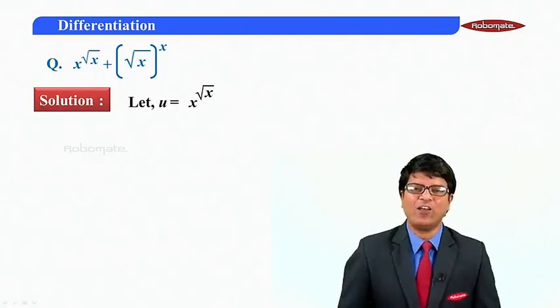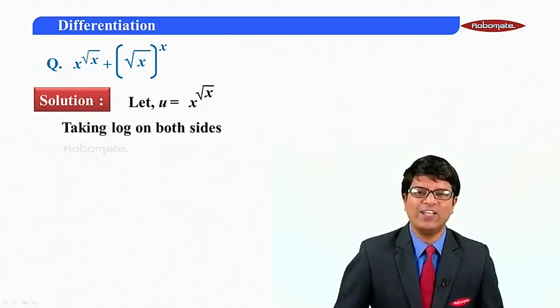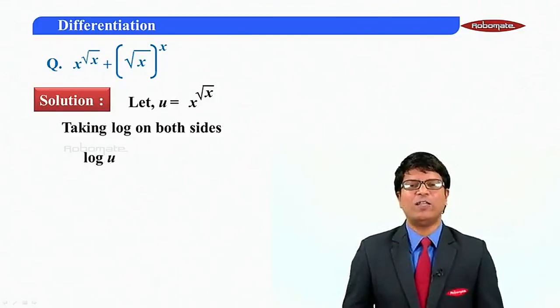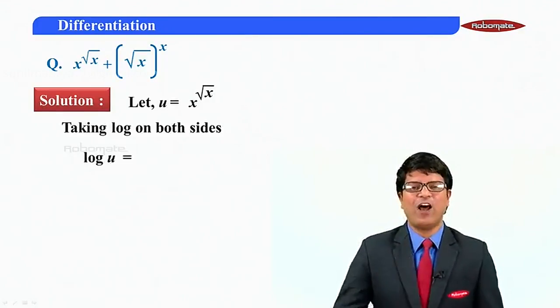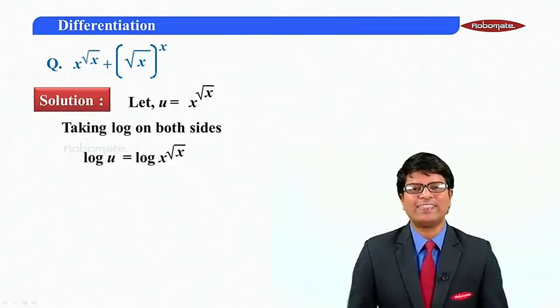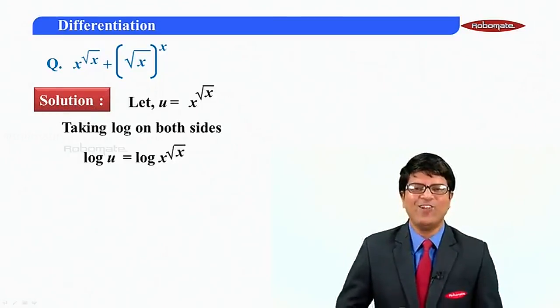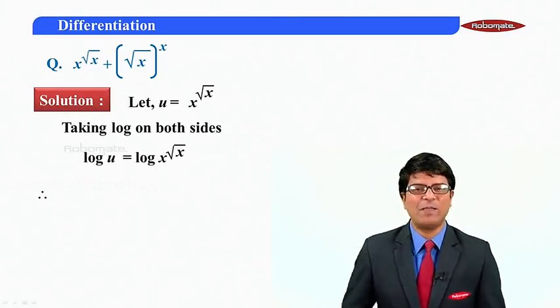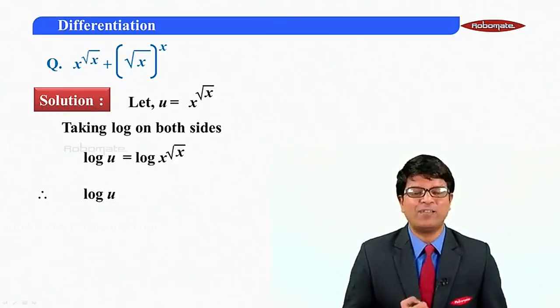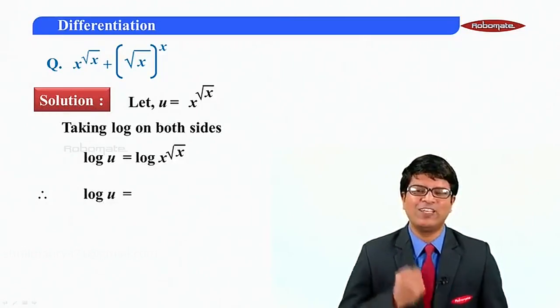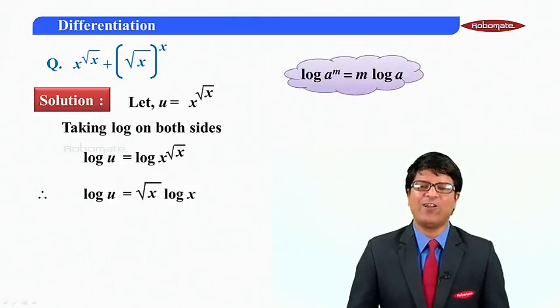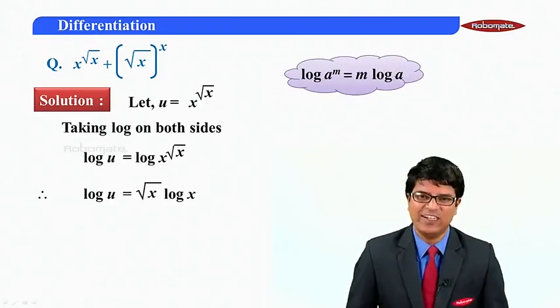Take log on both sides. Log u will be log of x raised to root x. Since the power becomes the coefficient, log u will be root x times log x.